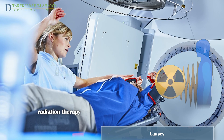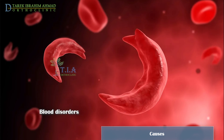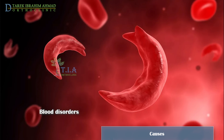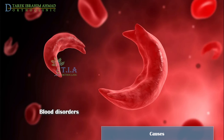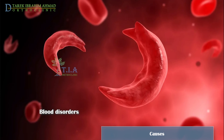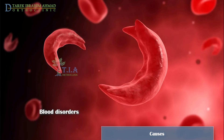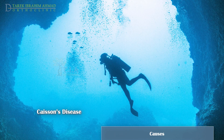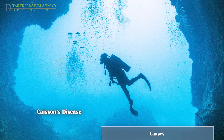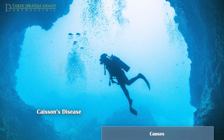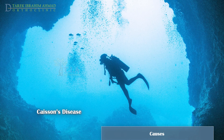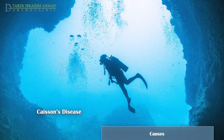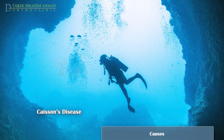Blood disorders like thalassemia and sickle cell disease can cause small clots to form in the tiny arteries supplying blood to the femoral head, thereby blocking blood flow to part of the bone. An unusual condition called Caisson's disease, seen in deep-sea divers, causes the release of nitrogen bubbles into the arterial circulation, which can block the blood vessels of the femoral head.